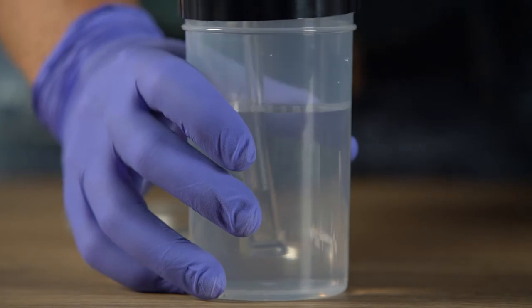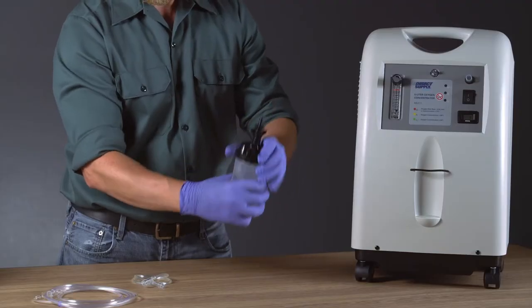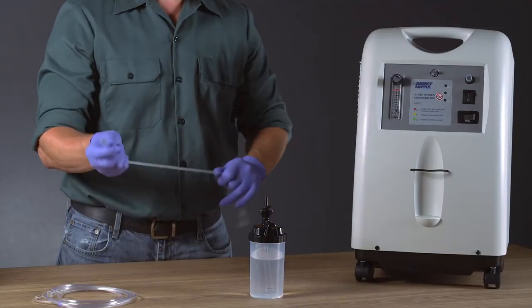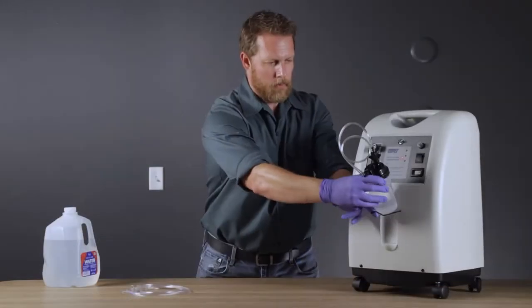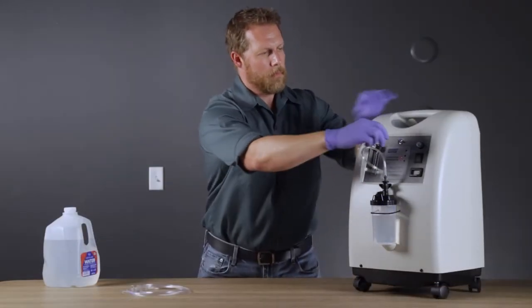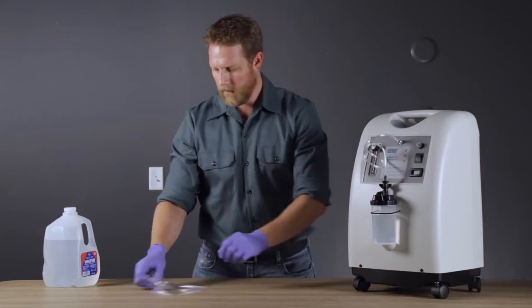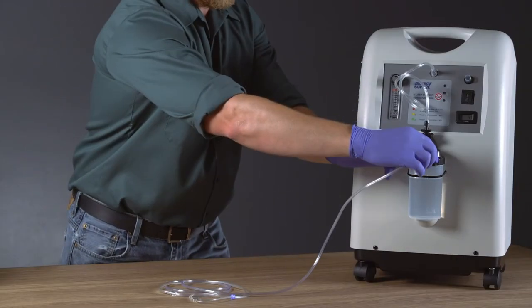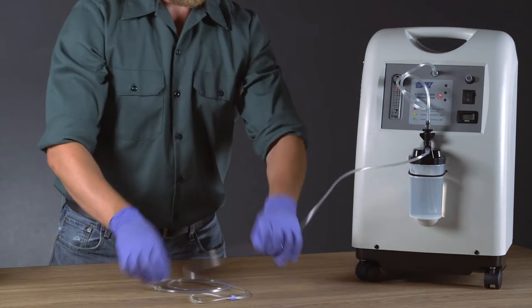Screw the cover back onto the humidifier bottle and connect the Oxygen hose. Insert the humidifier bottle into the elastic strap on the front of the concentrator and then connect the Oxygen hose to the Oxygen Outlet on the concentrator. Attach the nasal cannula to the humidifier bottle.